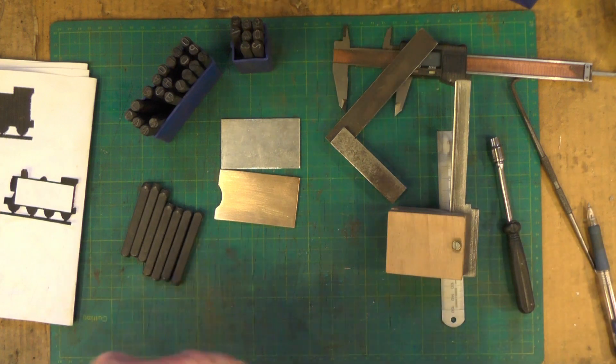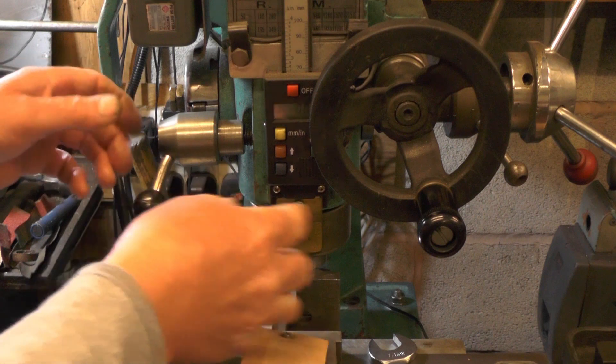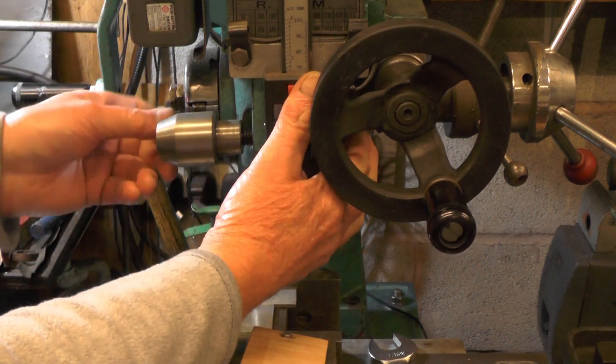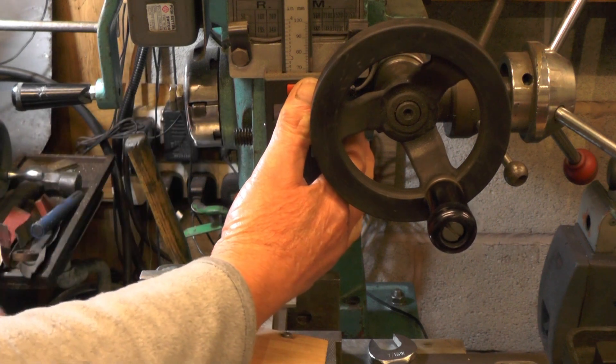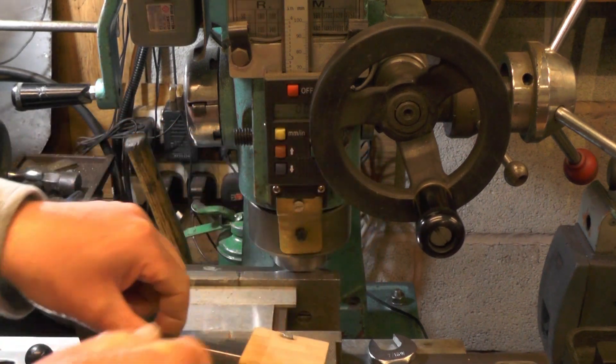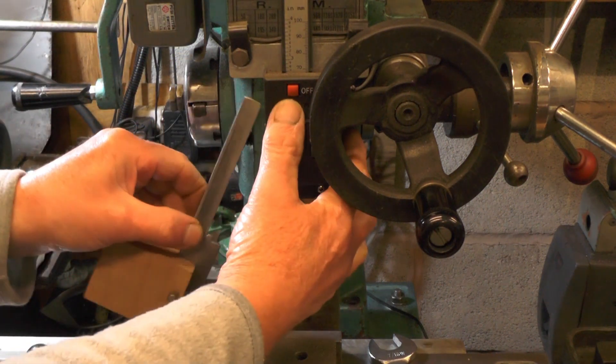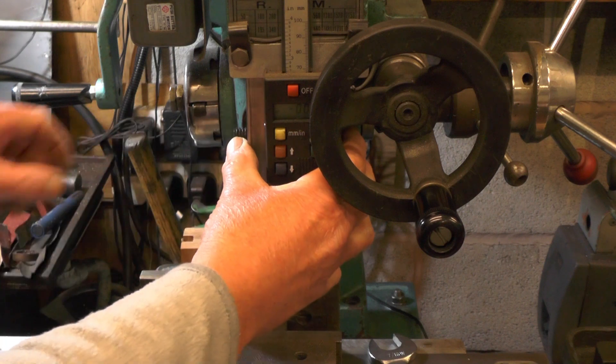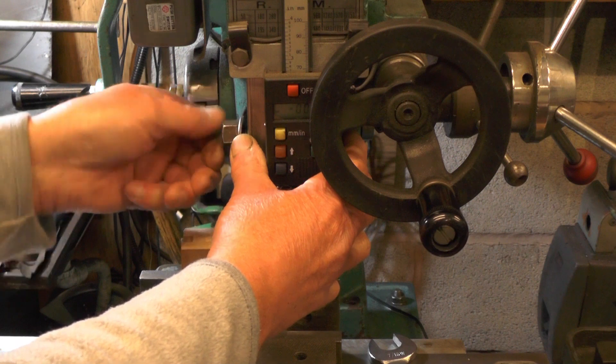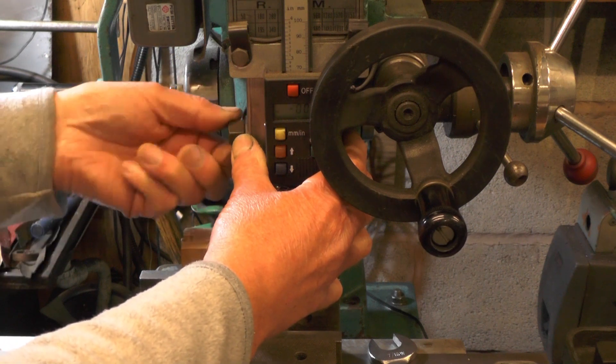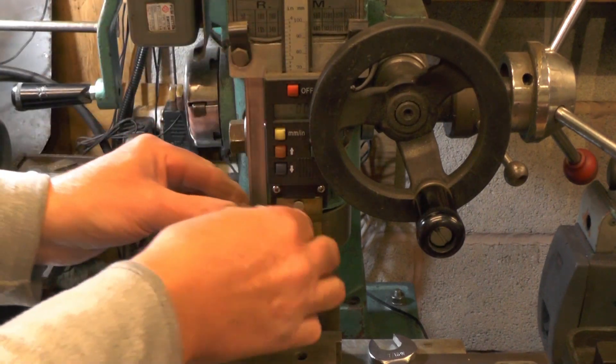So what I'm using is my quill lock. I'm taking the handle off the locking mechanism, leaving the cam bolt in, and then I'm fixing this angle that I've made onto that bolt and just putting a nut on.